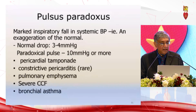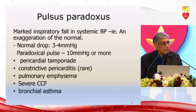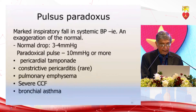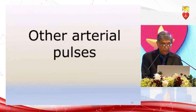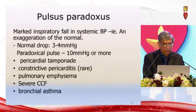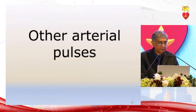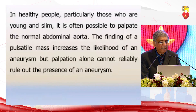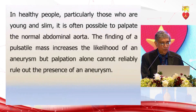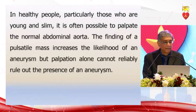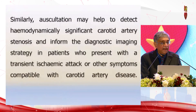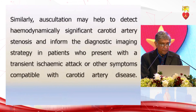The normal blood pressure drop with inspiration is three to four mmHg, but if it is more than ten mmHg it indicates pericardial tamponade. Constrictive pericarditis is rare, and therefore pulsus paradoxus is actually an exaggeration of the normal inspiratory drop — it is not absent arterial pulsation. Remember that in a thin individual the normal abdominal aorta can be palpated, and therefore it does not indicate an aneurysm.